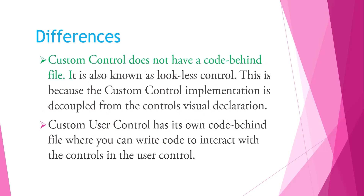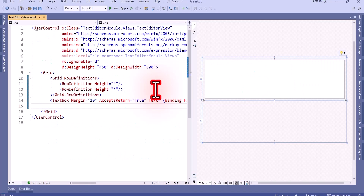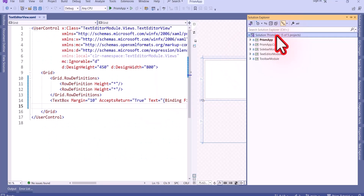Custom controls do not have a code-behind file; they are also known as lookless controls because the custom control implementation is decoupled from the control's visual declaration. A custom user control has its own code-behind file where you can write code to interact with the controls in the user control. Now we will see a practical example.